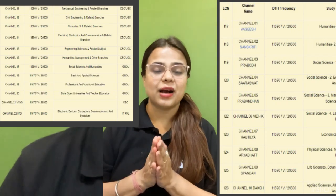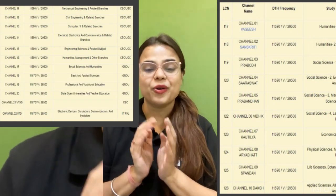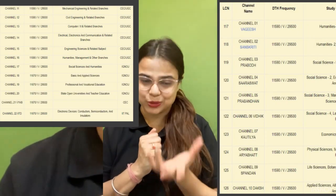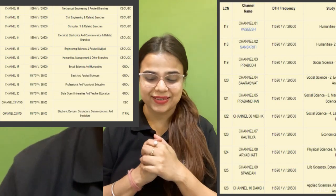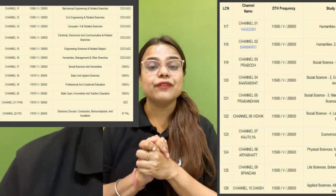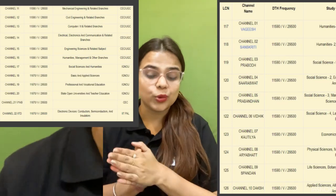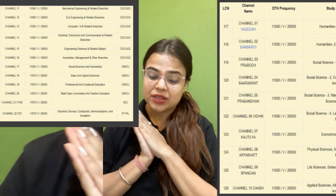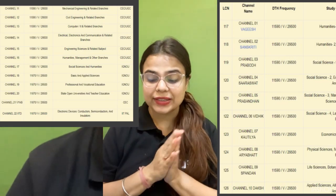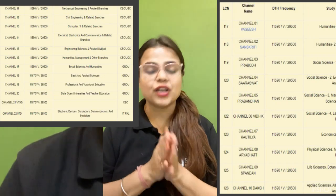The channels 1 to 10 are: Vagish, Sanskrit, Prabodh, Saraswat, Prabandhan, Vidhik, Kautilya, Aryabhat, Spandhan, Daksha, and Vyas.